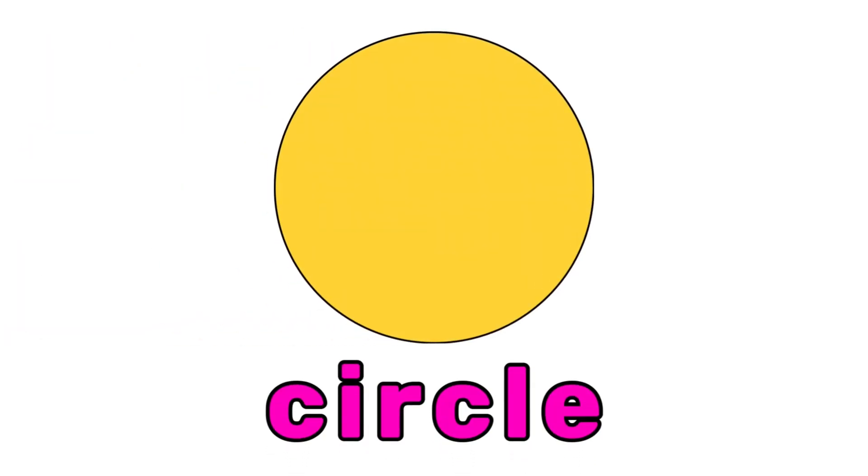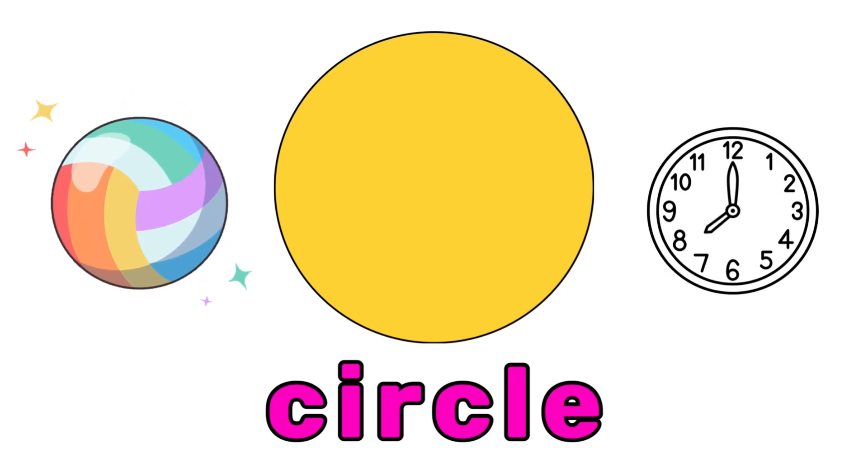This is a circle. Can you say circle? Circle is round. It has no corners, like a ball or a clock. Say it with me. Circle.